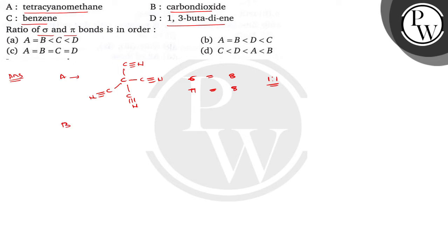In case of B, it is carbon dioxide, C double bond O and double bond O. Here the sigma bond is 2 and pi bond is also 2. So their ratio is also 1 is to 1.